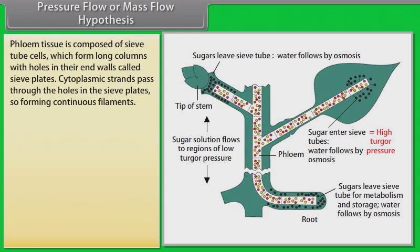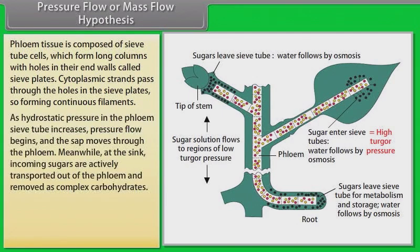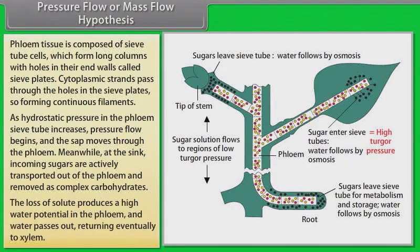Cytoplasmic strands pass through the holes in the sieve plates, forming continuous filaments. As hydrostatic pressure in the phloem's sieve tube increases, pressure flow begins and the sap moves through the phloem. Meanwhile, at the sink, incoming sugars are actively transported out of the phloem and removed as complex carbohydrates. The loss of solute produces a high water potential in the phloem, and water passes out.